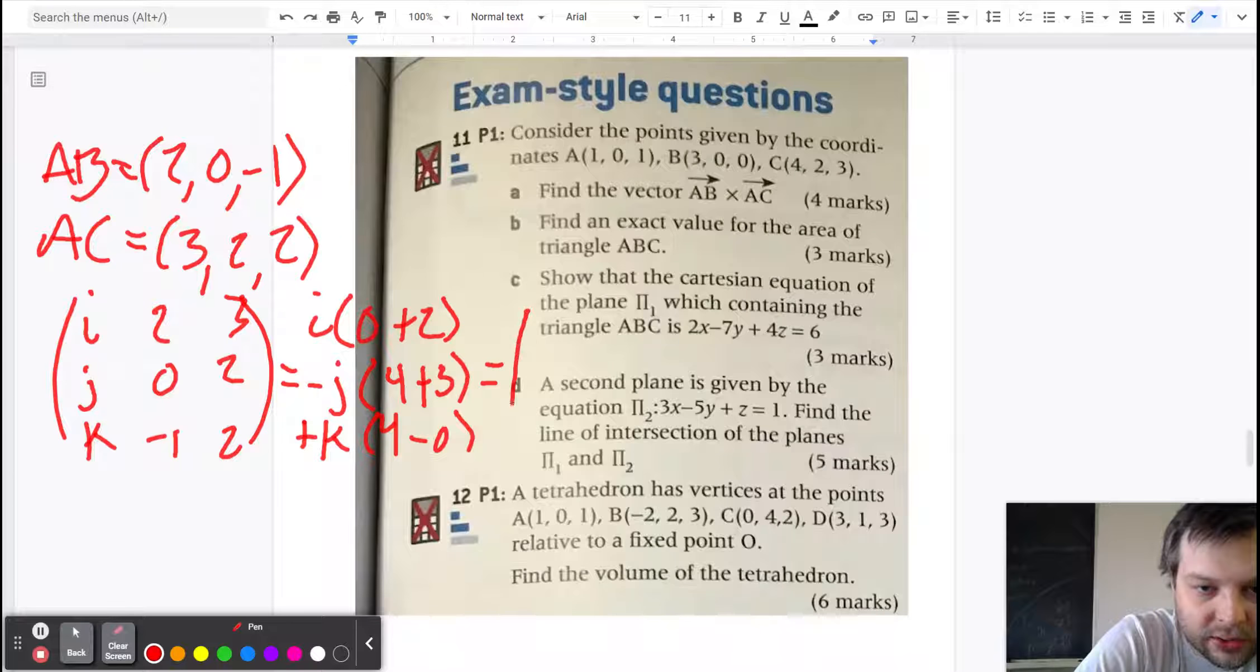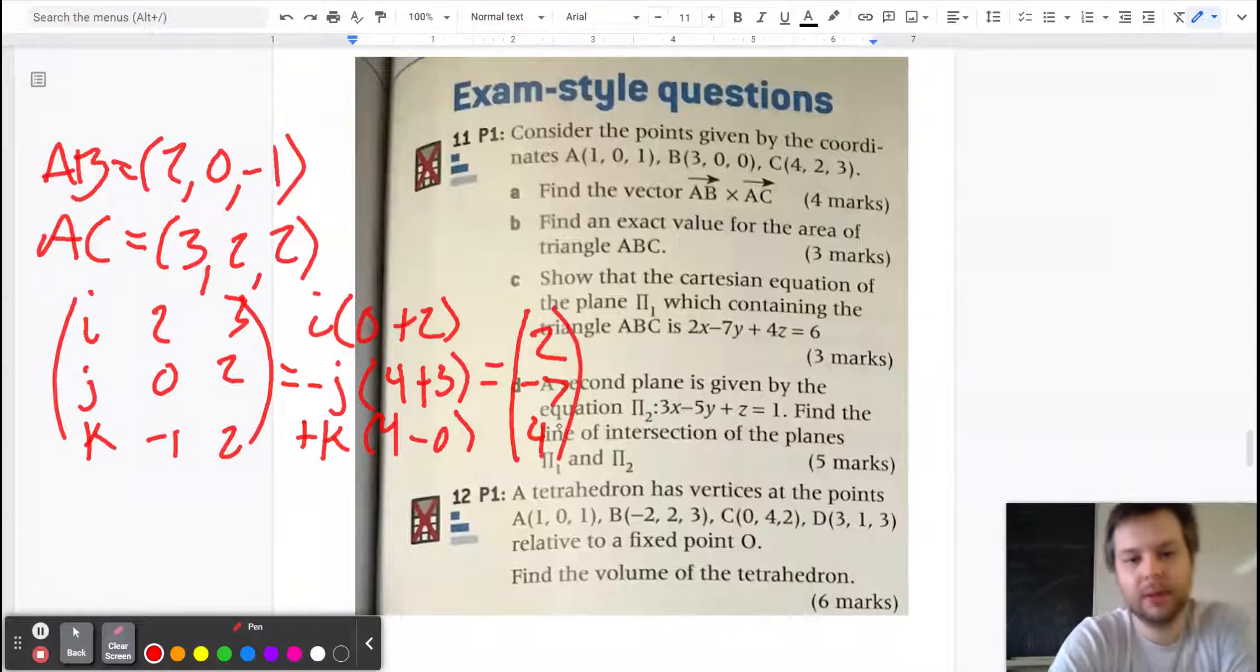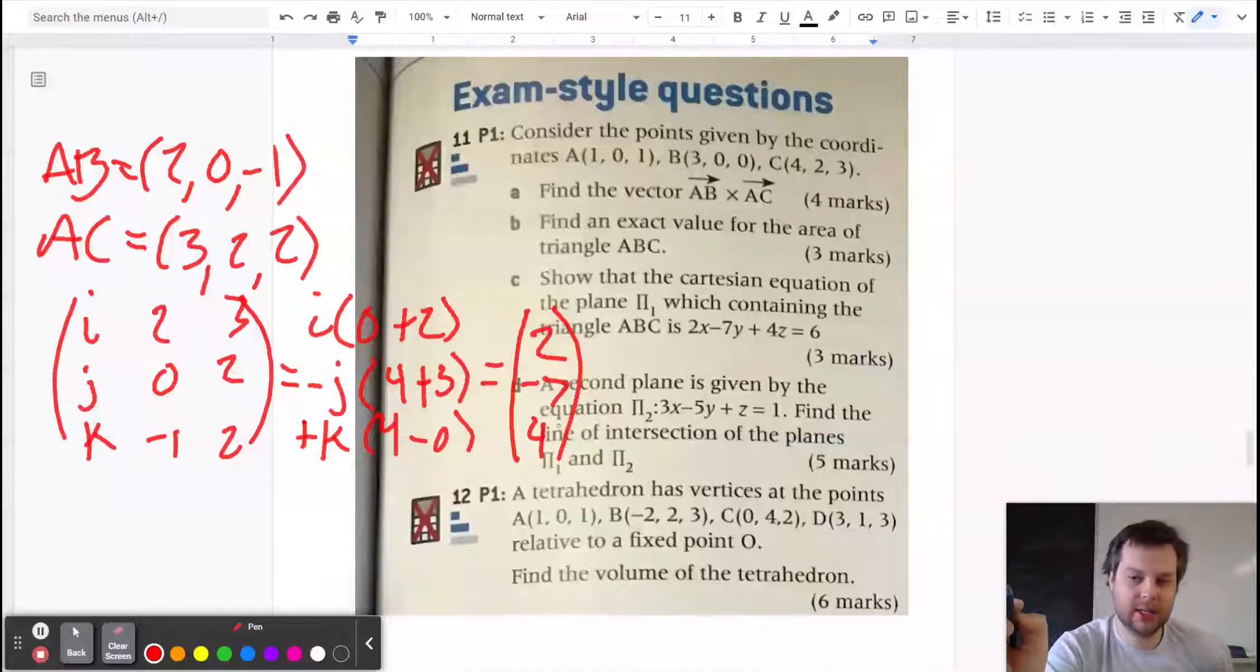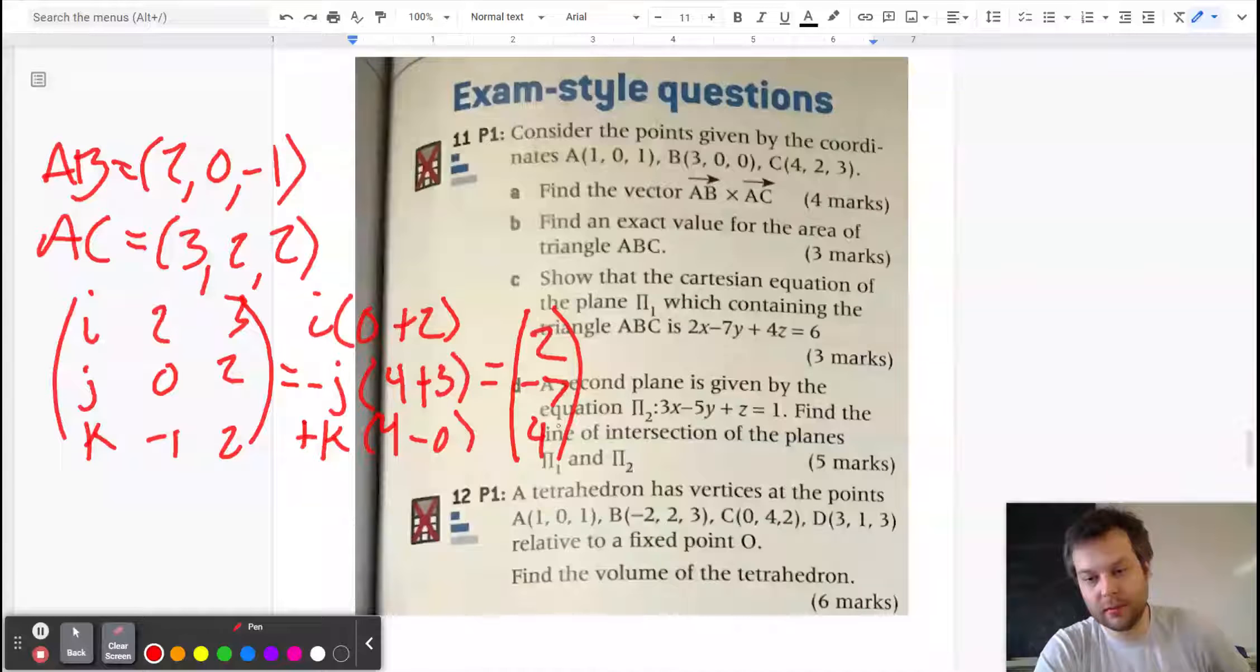So that gives me (2, -7, 4). That is it for question a, that's worth four marks on the test. So really it's a very mechanical process.